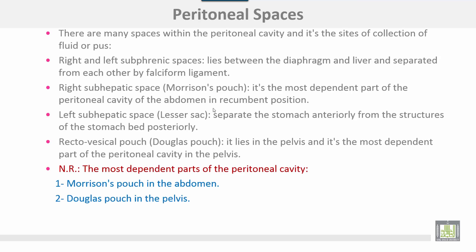Peritoneal spaces are many spaces within the peritoneal cavity and are the site of collection of fluid or pus. Subphrenic spaces lie between the diaphragm and the liver and are separated from each other by the falciform ligament. The right sub-hepatic space, sometimes called Morrison's pouch or the hepatorenal pouch, is the most dependent part of the peritoneal cavity of the abdomen in the recumbent position. The left sub-hepatic space is the lesser sac, which separates the stomach anteriorly from the structures of the stomach bed posteriorly.